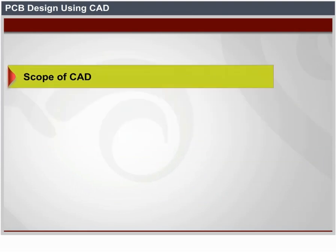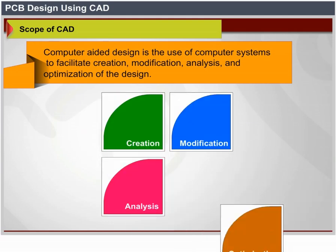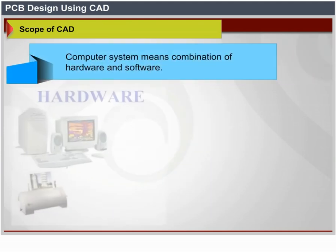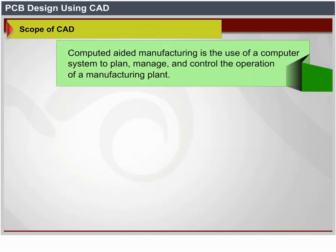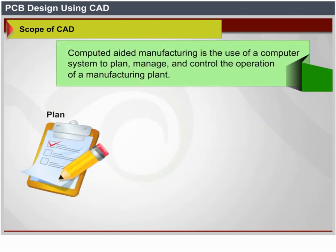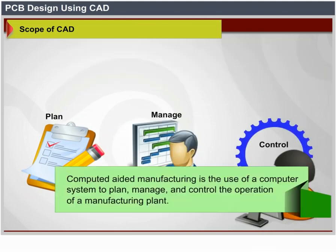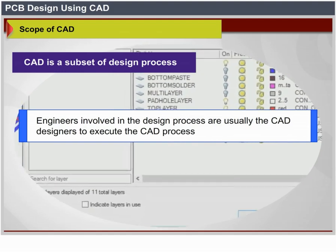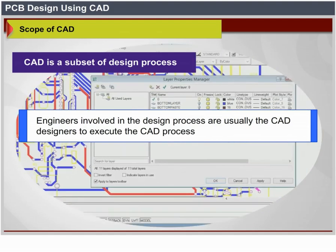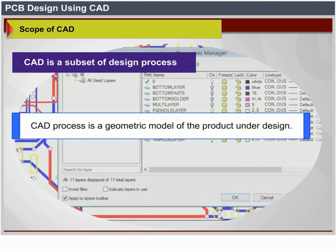Scope of CAD. Computer aided design is the use of computer systems to facilitate creation, modification, analysis, and optimization of design. A computer system means a combination of hardware and software. Computer aided manufacturing is the use of computer systems to plan, manage, and control the operation of a manufacturing plant. CAD is a subset of the design process; engineers involved in the design process are usually themselves the CAD designers who execute the CAD process, which produces a geometric model of the product under design.